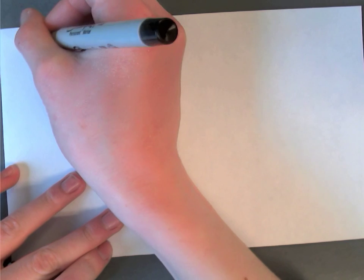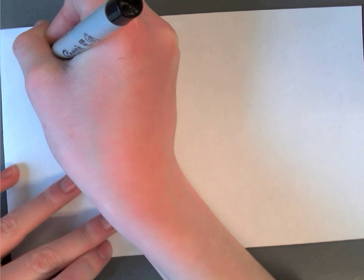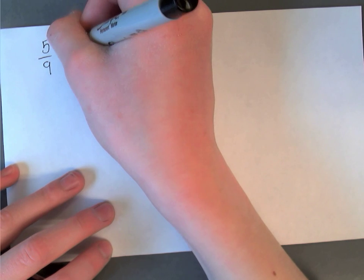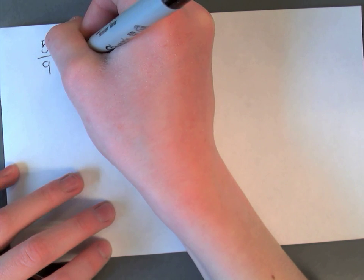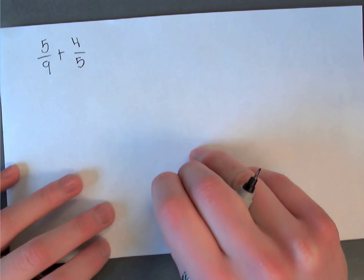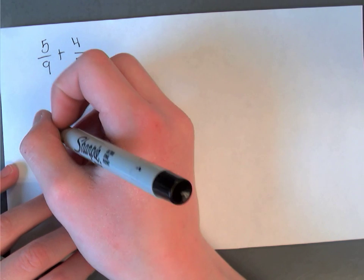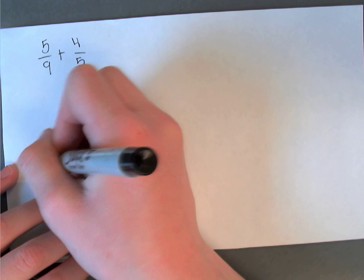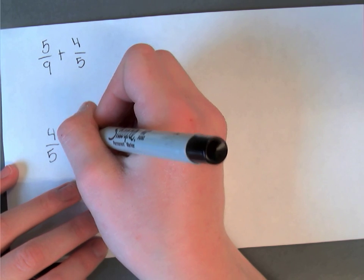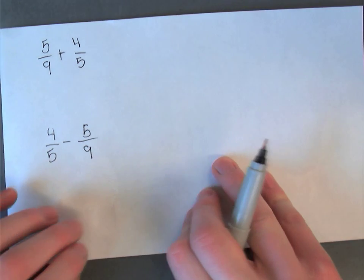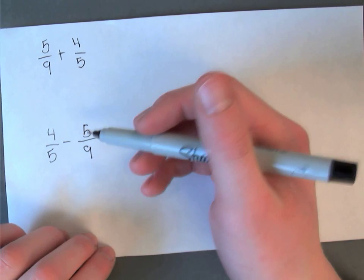So for this demonstration we are going to use five ninths plus four fifths. And then for our subtraction problem I'm going to do four fifths subtract five ninths. Basically it's pretty much the same problem except you're subtracting.